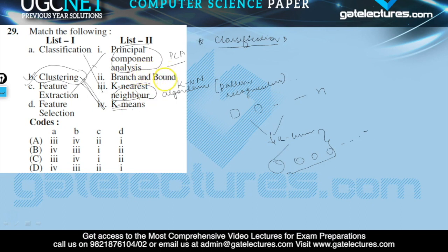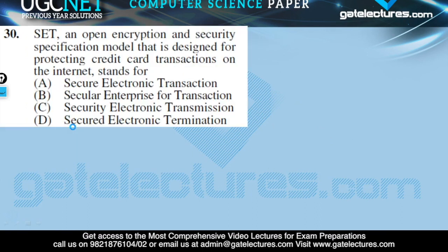The next is feature selection. For feature selection, we use the Branch and Bound algorithm, which is used to find the optimal feature subset without dealing with all possible sets. So the correct answer of this question is option C.